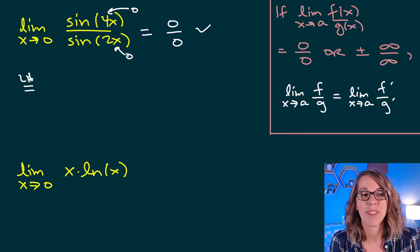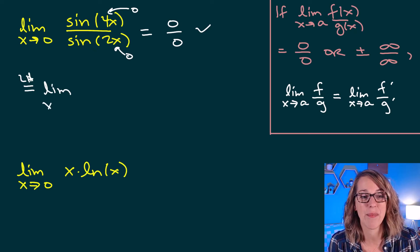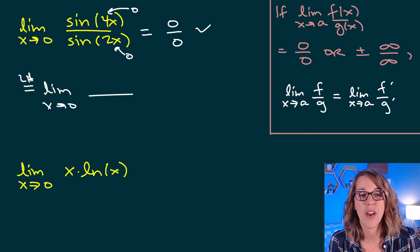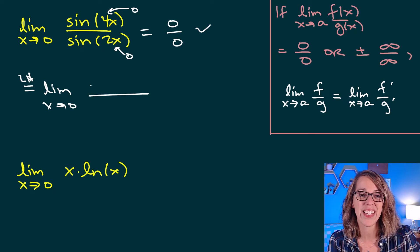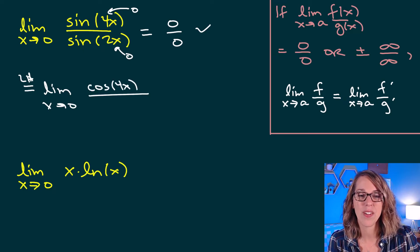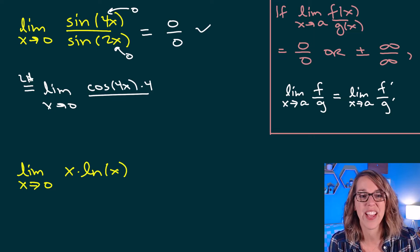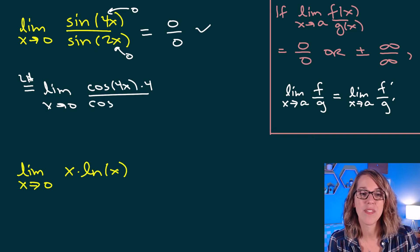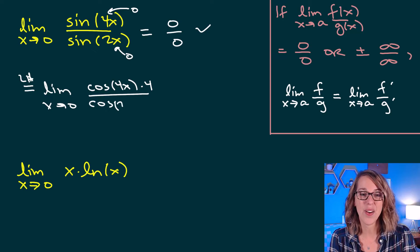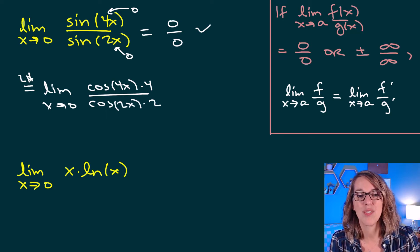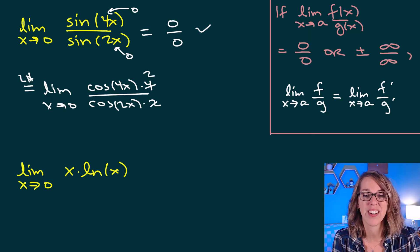Applying L'Hôpital's rule, I take the derivative of the numerator and the denominator. As X approaches 0, the derivative of sine is cosine. I have 4X inside, so by the chain rule I multiply by 4 on the outside. In the denominator, the derivative of sine of 2X is cosine of 2X, and the chain rule gives a factor of 2. I can cancel, leaving a 2 in the numerator.